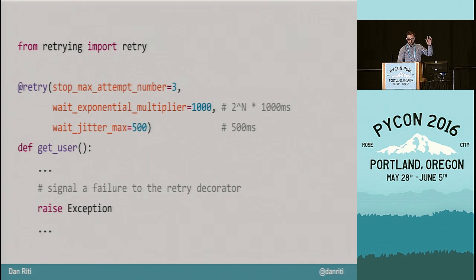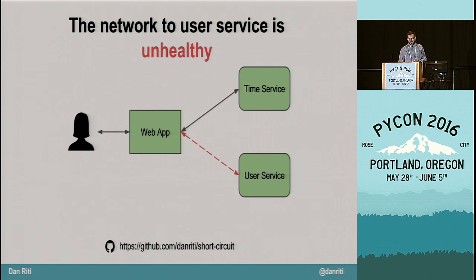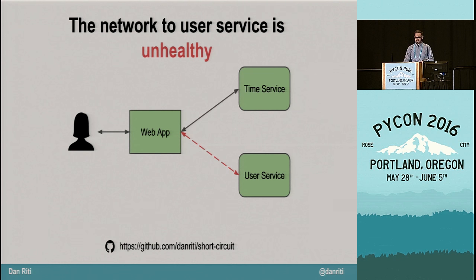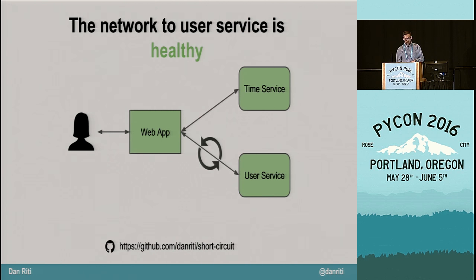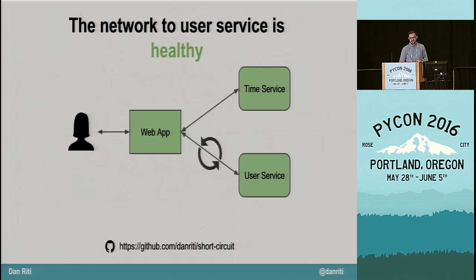Here's what retrying looks like in Python using the retrying library — a personal favorite. It provides an extremely configurable retry decorator. We set max retry attempts to three, exponential backoff multiplier to one second (the wait delay is calculated as 2^n × multiplier, where n is the current retry count), and max random jitter to half a second — so every retry attempt adds a random value from 0 to 500ms to the actual wait delay. You signal failed attempts to the retry decorator by raising an exception. Applying this to our system: if the network from the web app to the user service experiences a brief outage, the first attempt fails. With our retry configured, we exponentially back off, wait, and by the second attempt the network has recovered — the request succeeds and returns the information to the user after a slight delay.